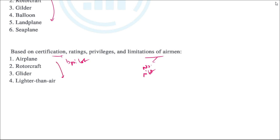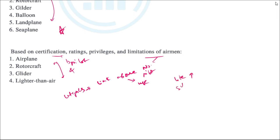Aircraft are also categorized based on pilot certification ratings, limitations of airmen, passenger capacity, and pilot categories. A separate video has been made about these in detail — you can click the link above to learn more. If you liked the video, hit the like button and subscribe to the channel for more videos. Thank you for watching.